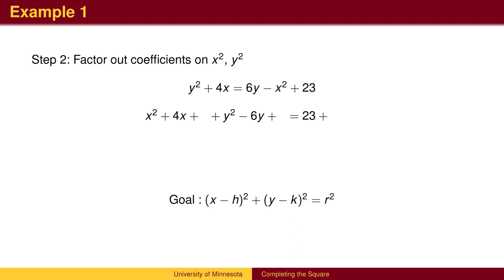We now wish to figure out how x-squared plus 4x might occur in a perfect square, and also how y-squared minus 6y might occur in a perfect square. We can get x-squared plus 4x plus some constant by squaring x plus 2.